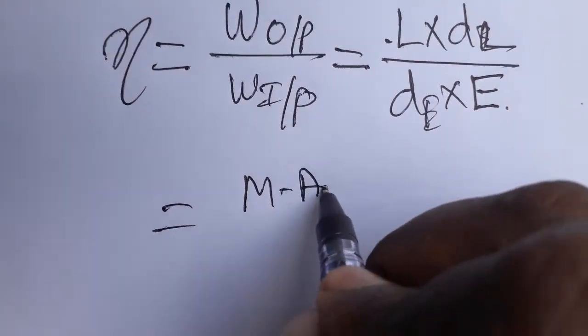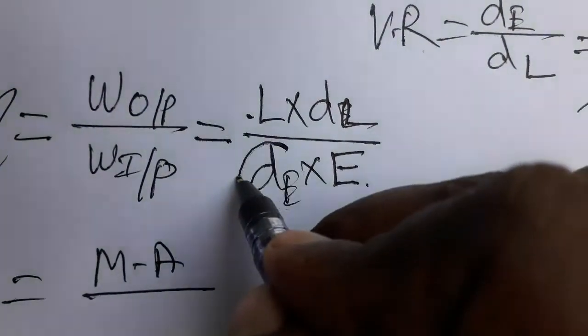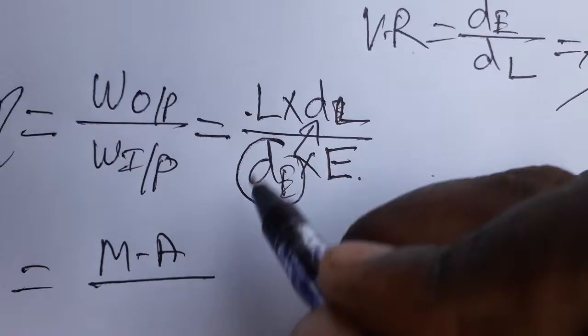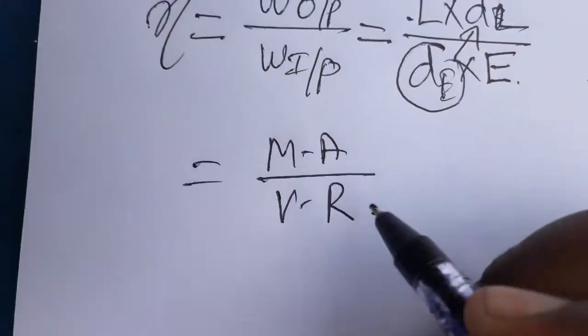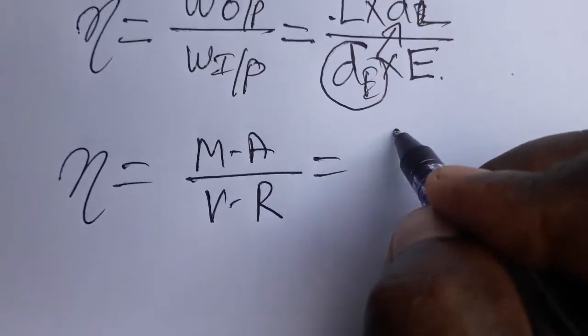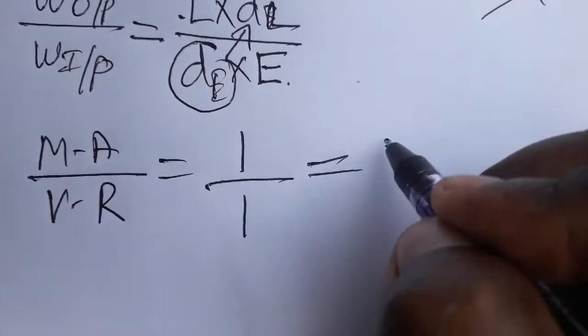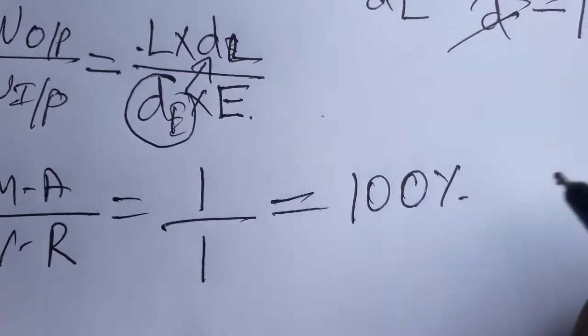Load by effort we can take as mechanical advantage. Displacement of effort by displacement of load, that is inversely proportional, we are getting velocity ratio. So both we are getting as one, we will get 100% efficiency. Thank you.